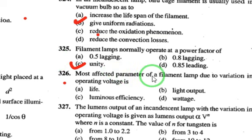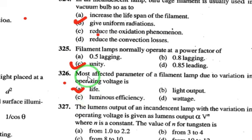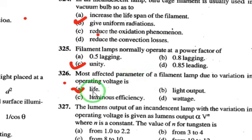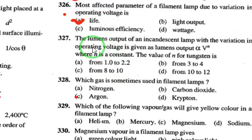The most affected parameter of a filament lamp due to variation in operating voltage is the life of the lamp. Sudden voltage drops or surges continuously affect the lamp's life.